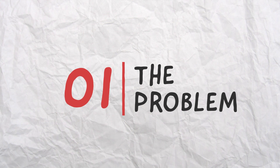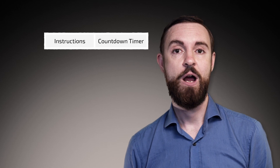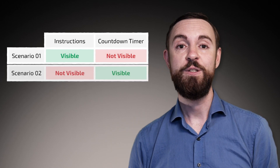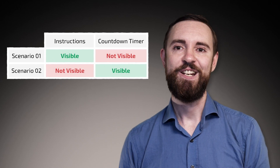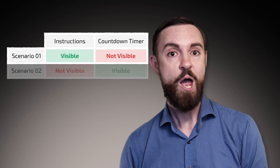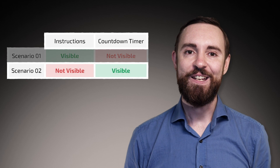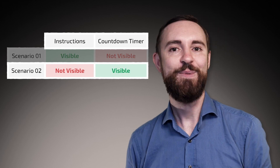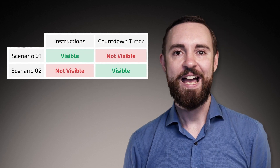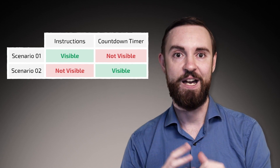Have you ever been in a training session that had a timed activity? You'll need a slide with instructions and a timer to count down to zero. In my experience, one of two common situations will happen — neither is desirable. You either have a clear idea of what you need to do but no idea how much time you have, or a clear idea of how much time you have but not what you need to be doing. It can also be disruptive as the trainer has to keep swapping in and out of the presentation to see either of those items.